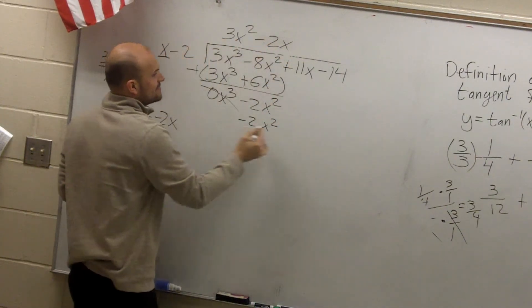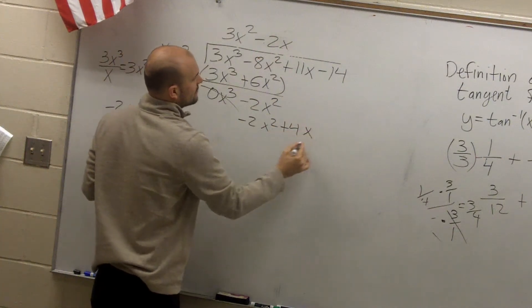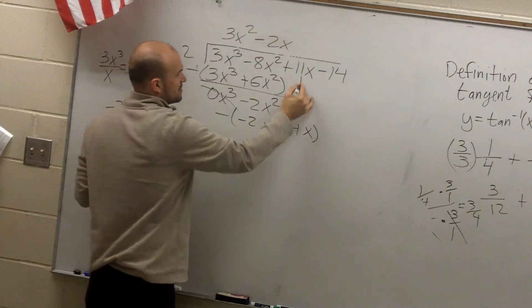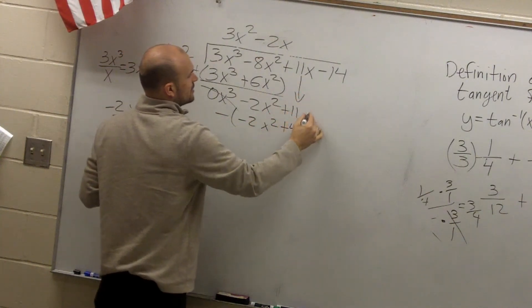Negative 2x times negative 2 is a positive 4. Parentheses, subtract. And then, bring down the positive 11x.